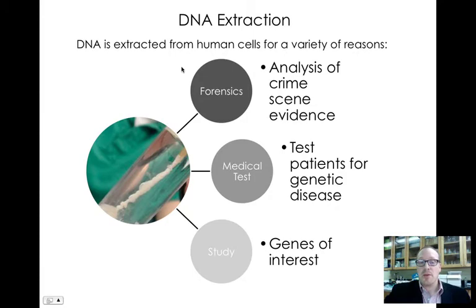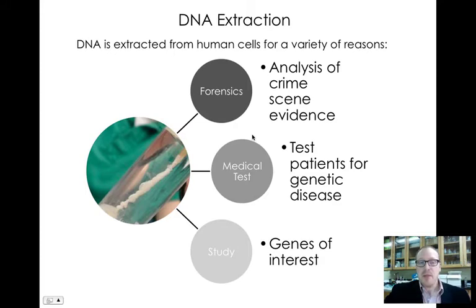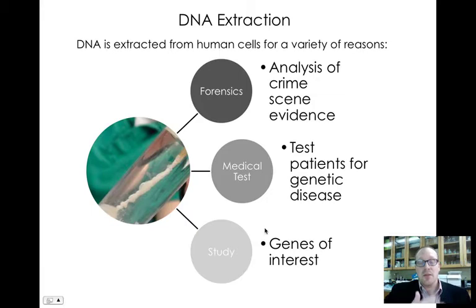One reason is forensic — analyzing crime scenes to determine who a suspect might be, who perpetrated a crime, or who a victim might be if they're unidentifiable. Another reason is for a medical test — to test a patient or newborn to see if they have a gene correlated with a disease. The third reason is to study: if we know genes correlated with disease, we need to get the DNA from an individual who has that gene in order to conduct the study.